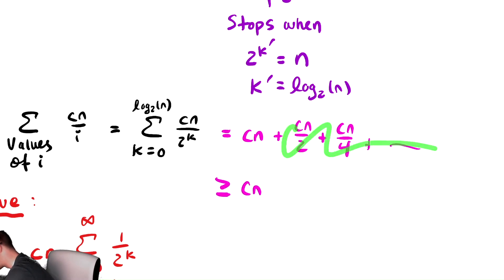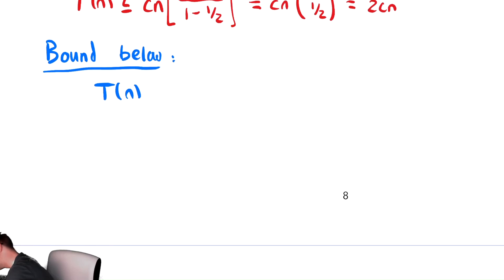I can just drop all those other positive terms. So for my bound below, that's exactly what I'm going to do. I'm going to drop everything but the first term of the sum. So this is greater than or equal to just cn.